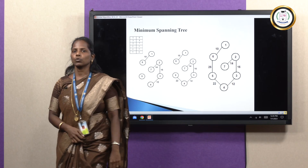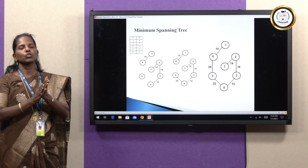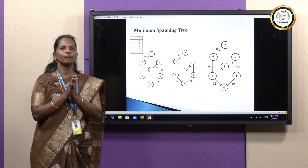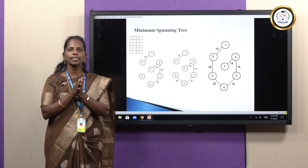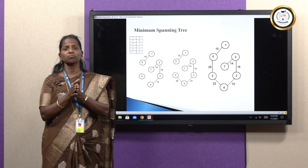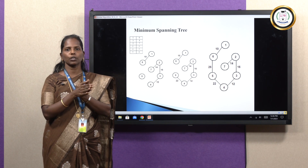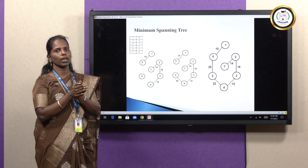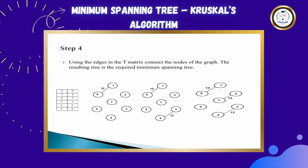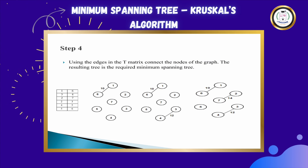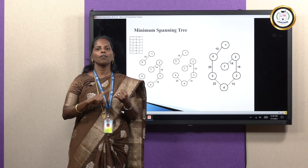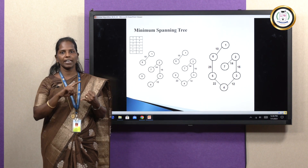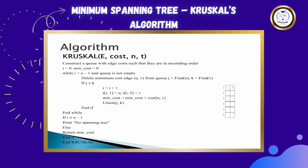This is your minimum spanning tree. The main application of the minimum spanning tree is: if you want to visit all the cities present in your network with minimum cost, you can use a minimum spanning tree algorithm. Now let us see an overview of the algorithm. The first step is we have to construct the queue with the edge cost in ascending order.